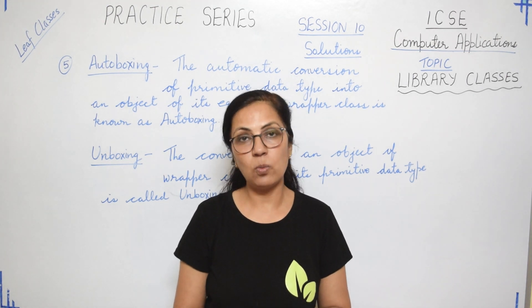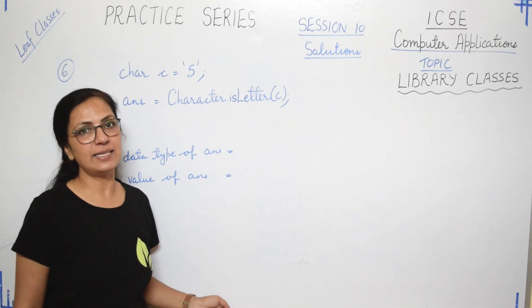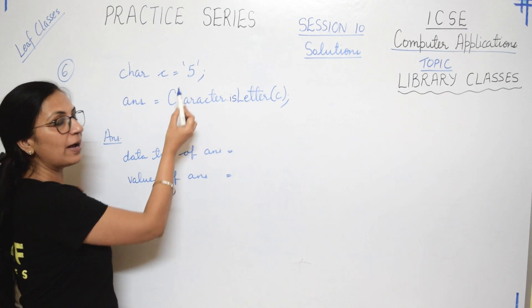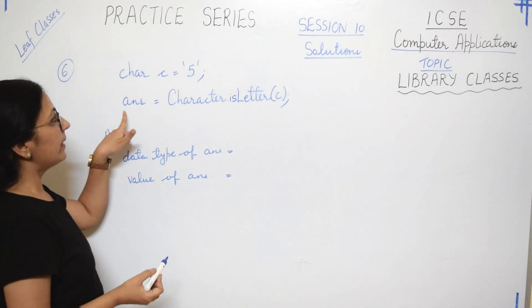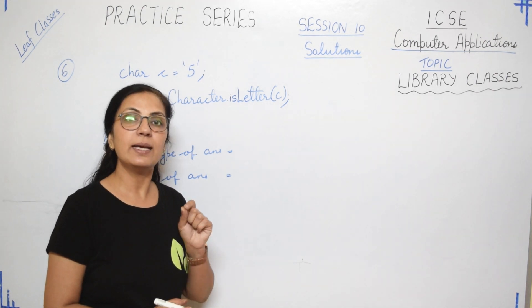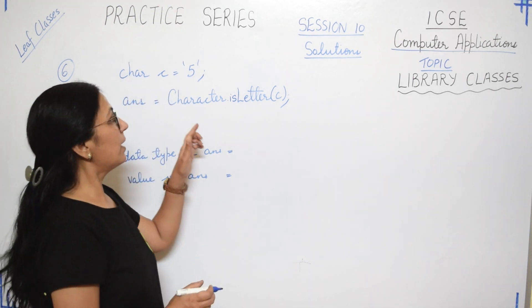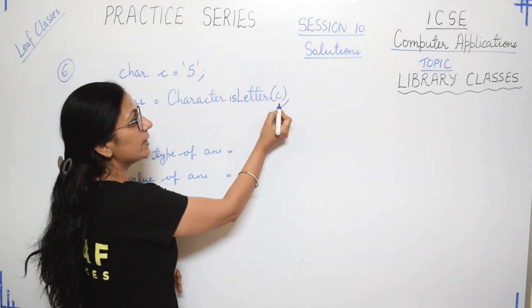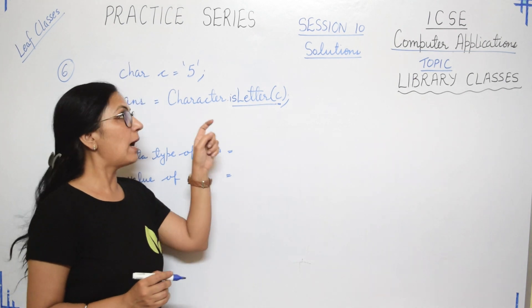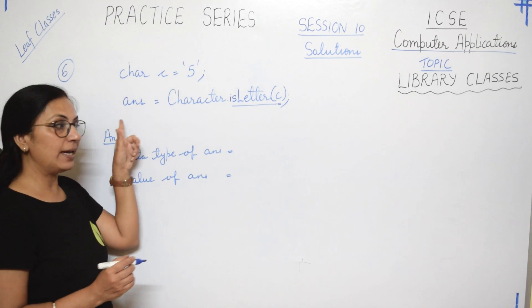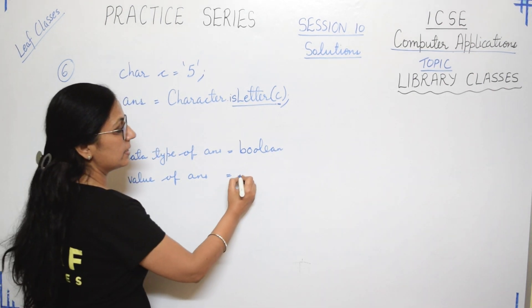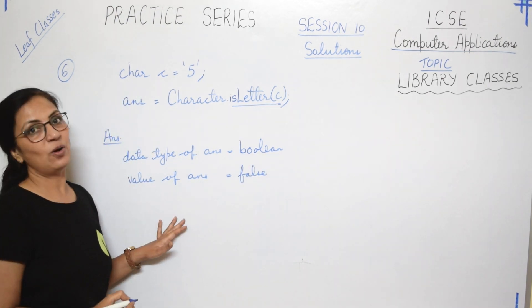Question number six is: state the data type and the value of ans variable. Now if you see here, c is a variable of character type and this five character is stored in c variable. Then ans equals to Character.isLetter of c. In that video I told you that if the function name is starting with 'is', that means it will return either true or false. So here Character.isLetter will check whether this specified character is a letter or not. c is a variable and c is storing 5. Is 5 a letter? No. So the output of this will be false. So the data type of ans variable will be boolean since it is storing the value false. So the value of ans is false and data type is boolean. I hope this also you have done correctly in your notebook.